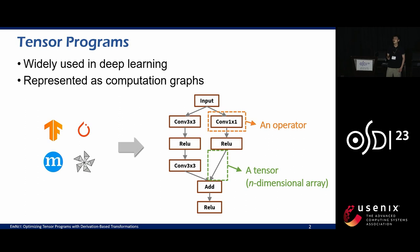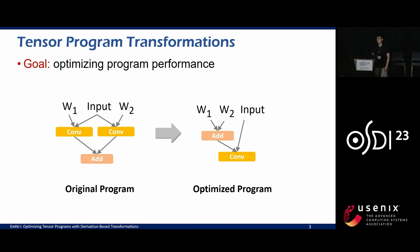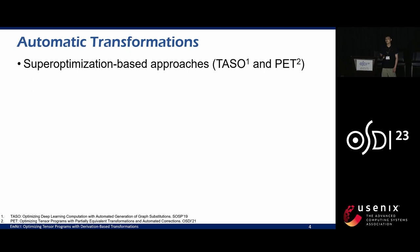Tensor programs are prevalent and widely used in deep learning. They are usually represented with computation graphs, where each node is an operator and each edge is a tensor. To optimize tensor program performance, execution frameworks adopt tensor program transformations to modify computation graphs. For example, two parallel convolutions followed by an addition can be transformed by adding the two convolution weights first and performing a convolution with the original input and the new weight, yielding an equivalent result with fewer operators. To automatically find these transformations, the mainstream approach is super-optimization, such as TASO and PET.